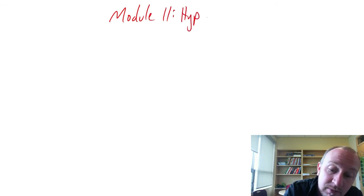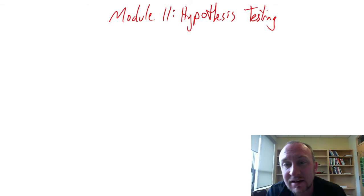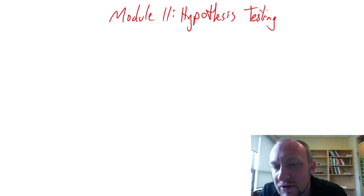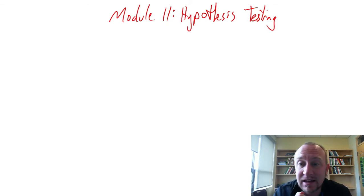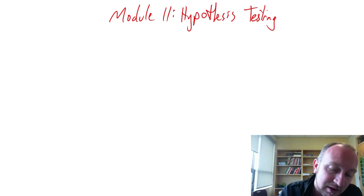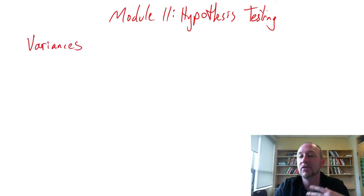Welcome to Module 11, where we're doing more hypothesis testing. In Module 9 we looked at single population means and proportions; in Module 10 we looked at two population means and proportions. Now in Module 11 we're going to be looking at variances as our new parameter of interest.